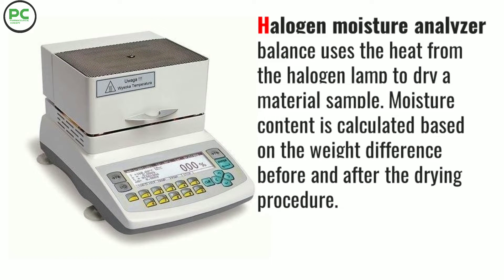Halogen moisture analyzer uses heat from a halogen lamp to dry the material. Moisture content is calculated based on the weight difference before and after the drying process.